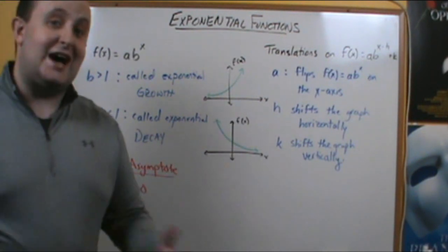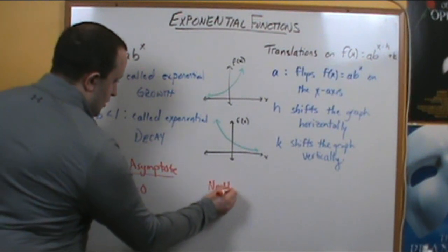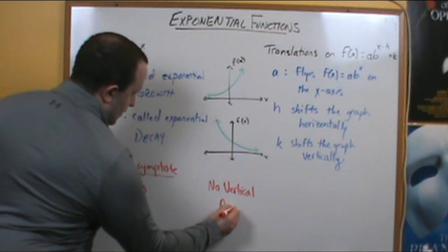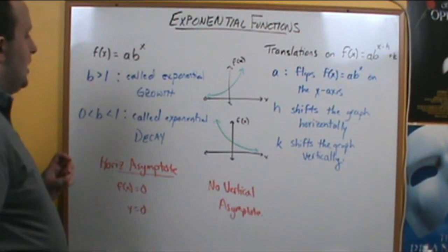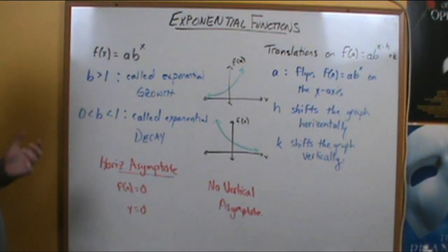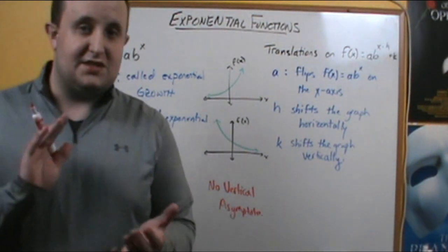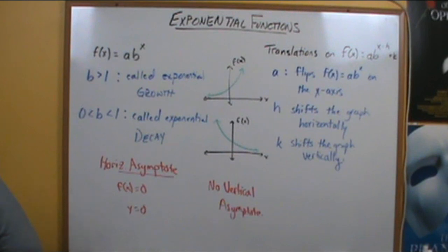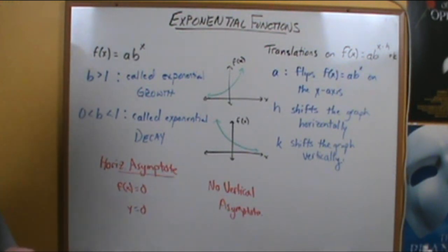These functions will not have a vertical asymptote — there is no vertical asymptote. To be honest, if you're going to graph these, the easiest way is to use a table of values. Using a table of values is the best way to graph these types of equations.